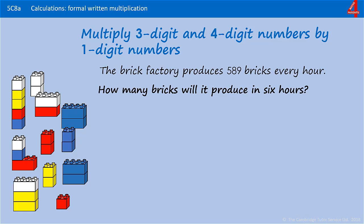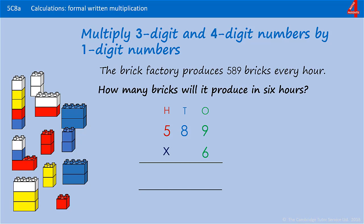The calculation: 589 bricks in an hour — how many in 6 hours? 589 multiplied by 6. 9 times 6 is 54 — put the 4 in the ones and carry the 5. 8 times 6 is 48, add 5 is 53 — put the 3 in and carry the 5. And 5 times 6 is 30, add on the 5 that we carried, that's 35. We put the whole of the 35 in. In 6 hours the factory produces 3,534 bricks.